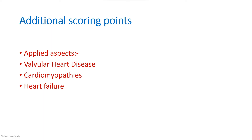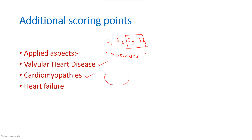For additional scoring points, you can mention applied aspects. Normal heart sounds are S1, S2, S3, and S4, of which S3 and S4 are not normally audible. In valvular heart disease, additional sounds called murmurs are produced, with specific murmurs corresponding to each type. You can also mention cardiac myopathies, where ventricles are dilated and fail to contract efficiently, and heart failure, where ventricles and atria fail to contract effectively.